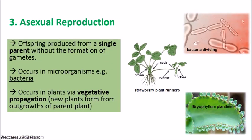The third role of mitosis is in asexual reproduction, where offspring are produced from a single parent without the formation of any gametes. This usually occurs in microorganisms such as bacteria. It can also occur in certain plants via vegetative propagation, where new plants form from the outgrowths of a parent plant.